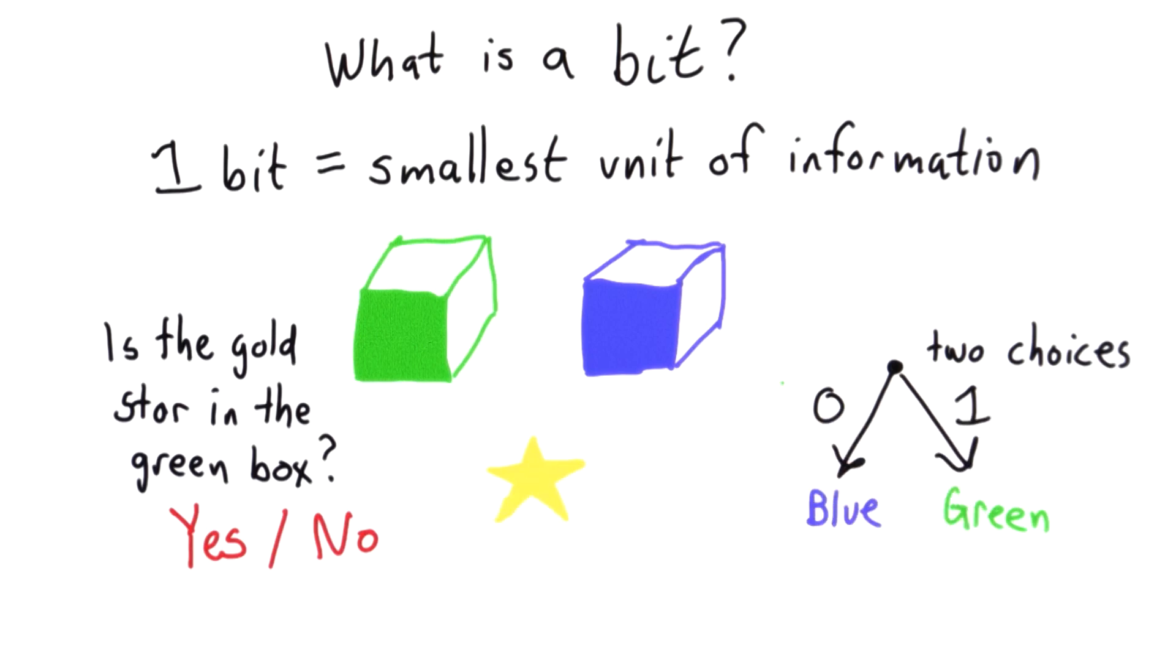But we could pick any two things. We could use green and blue. We could use yes and no. If we have two things and we can choose one of them, knowing which one to choose is one bit of information. So that's what one bit can do. It allows us to decide between two things.